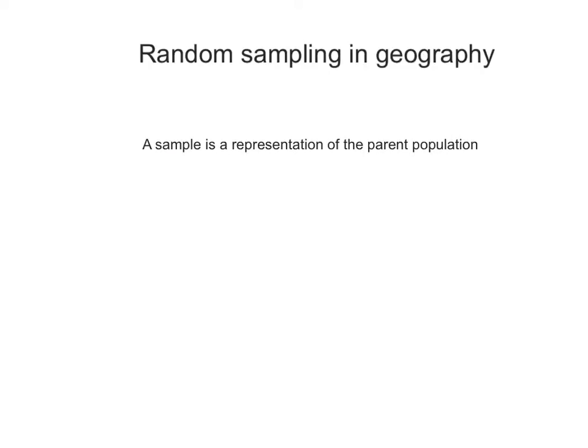In this tutorial, you'll learn about random sampling in geography. Sampling is a way of best representing a parent population. You can't sample every part of a population, so sampling allows you to gather a representation of it.